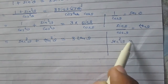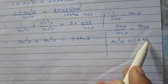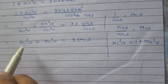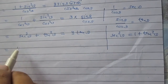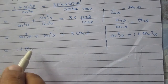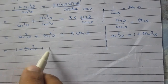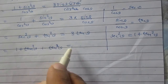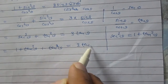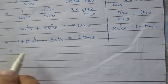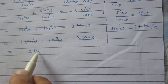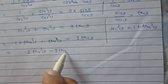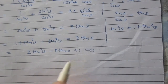We know that sec squared theta is equal to 1 plus tan squared theta. Using this identity, we can write sec squared theta as 1 plus tan squared theta. So 1 plus tan squared theta plus tan squared theta equals 3 tan theta, which gives us 2 tan squared theta minus 3 tan theta plus 1 is equal to 0.